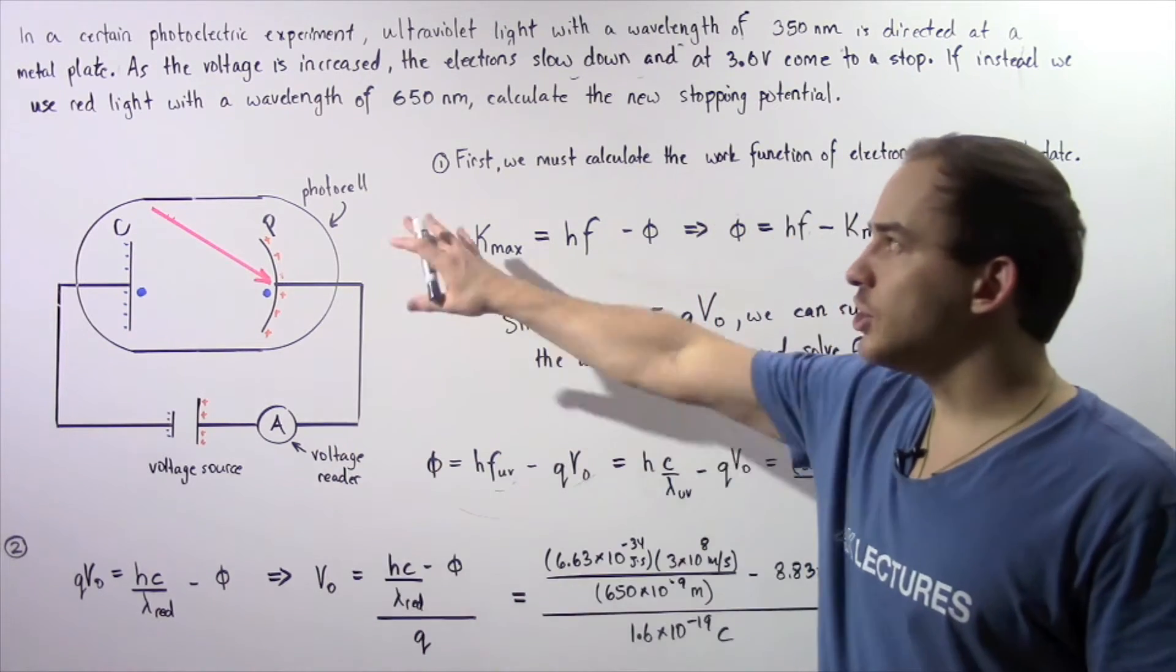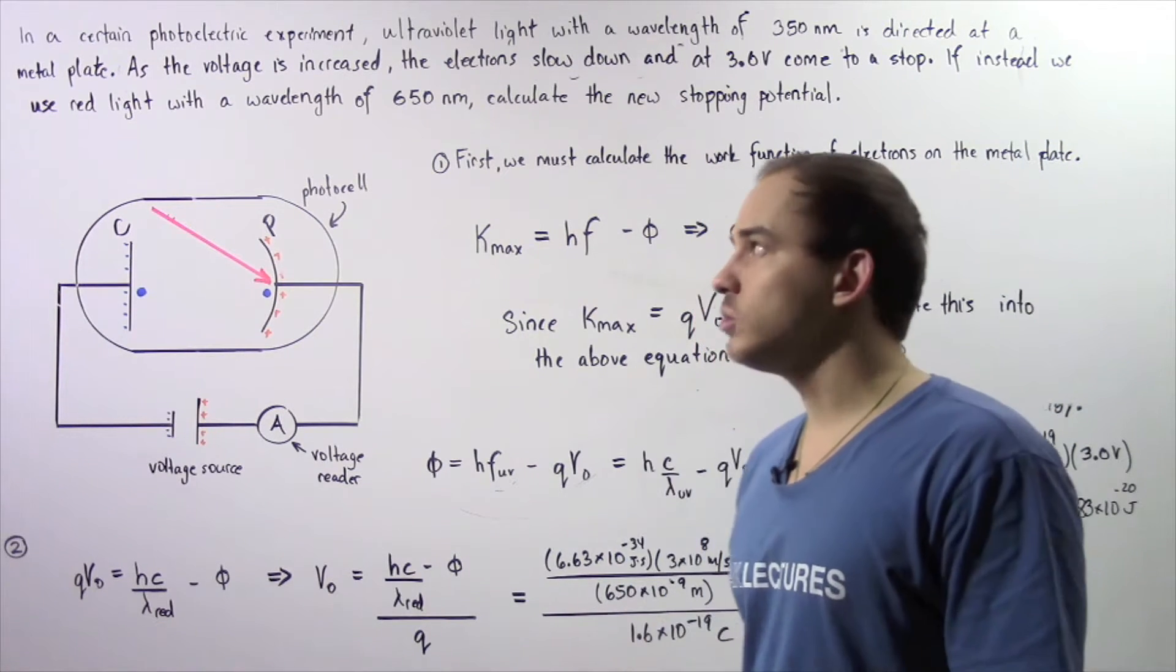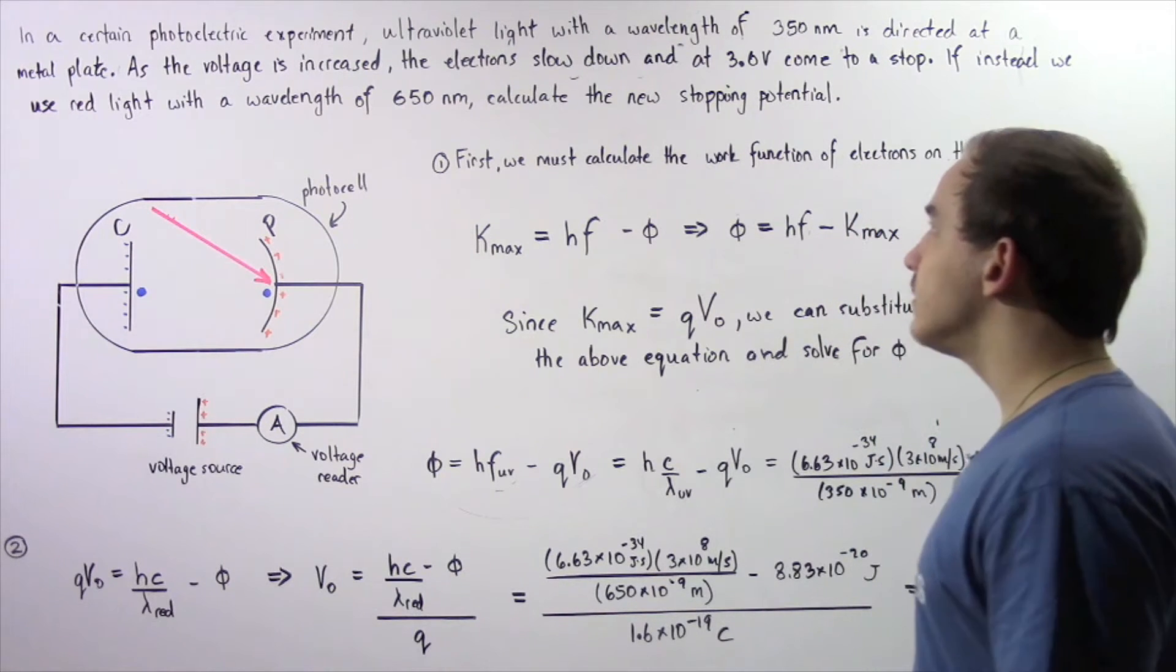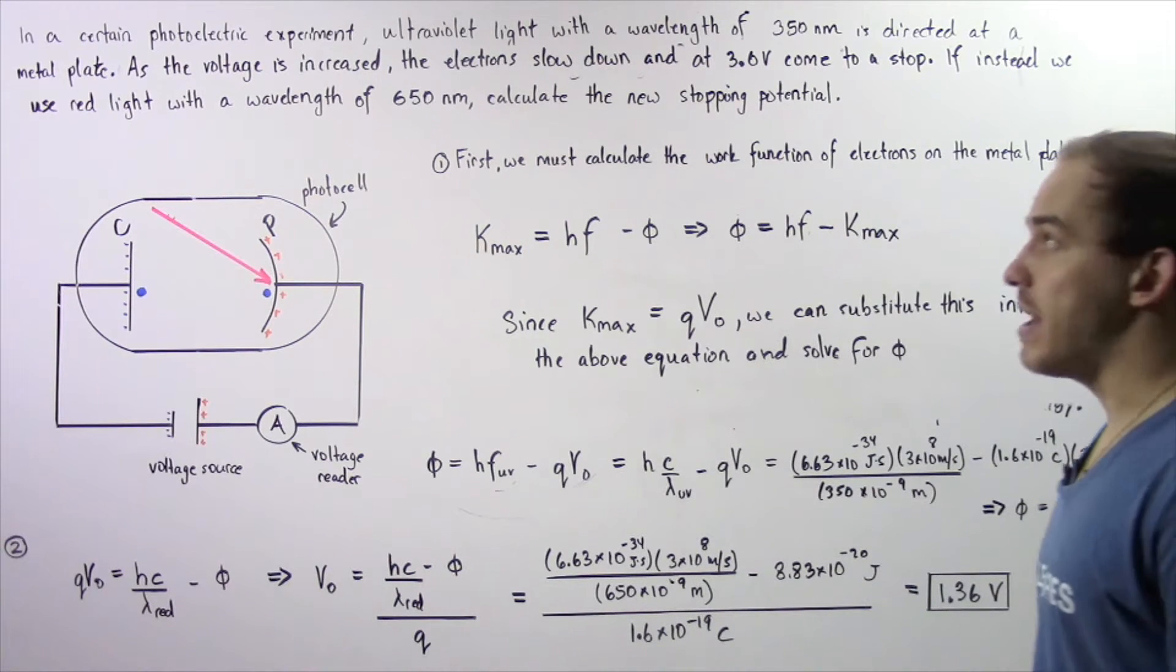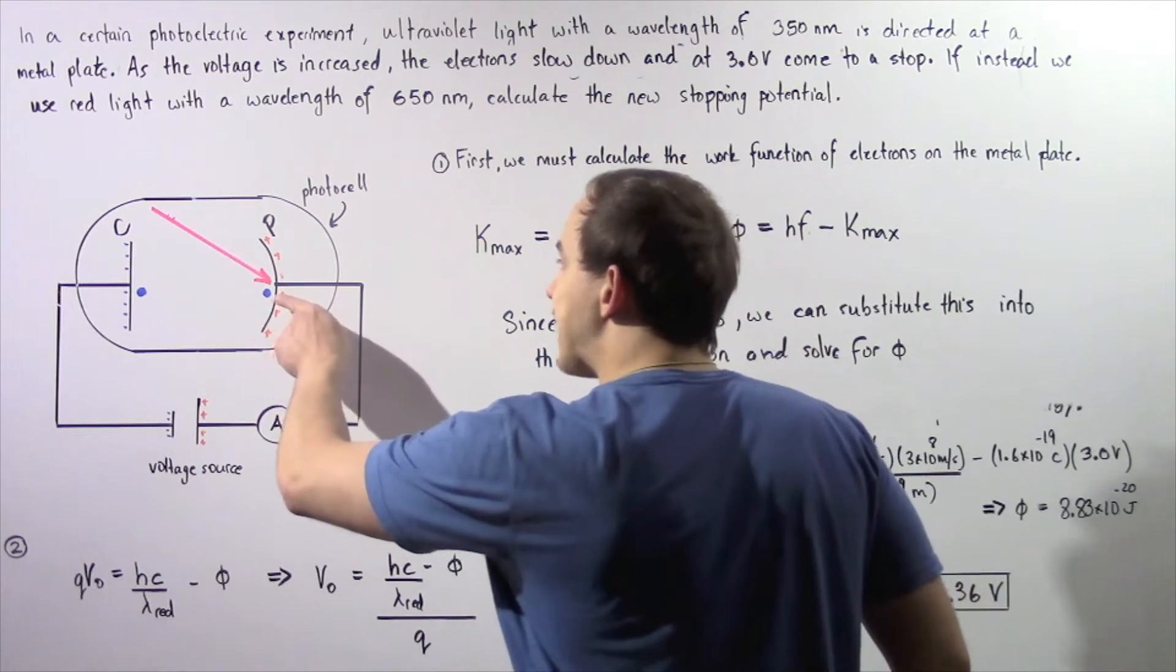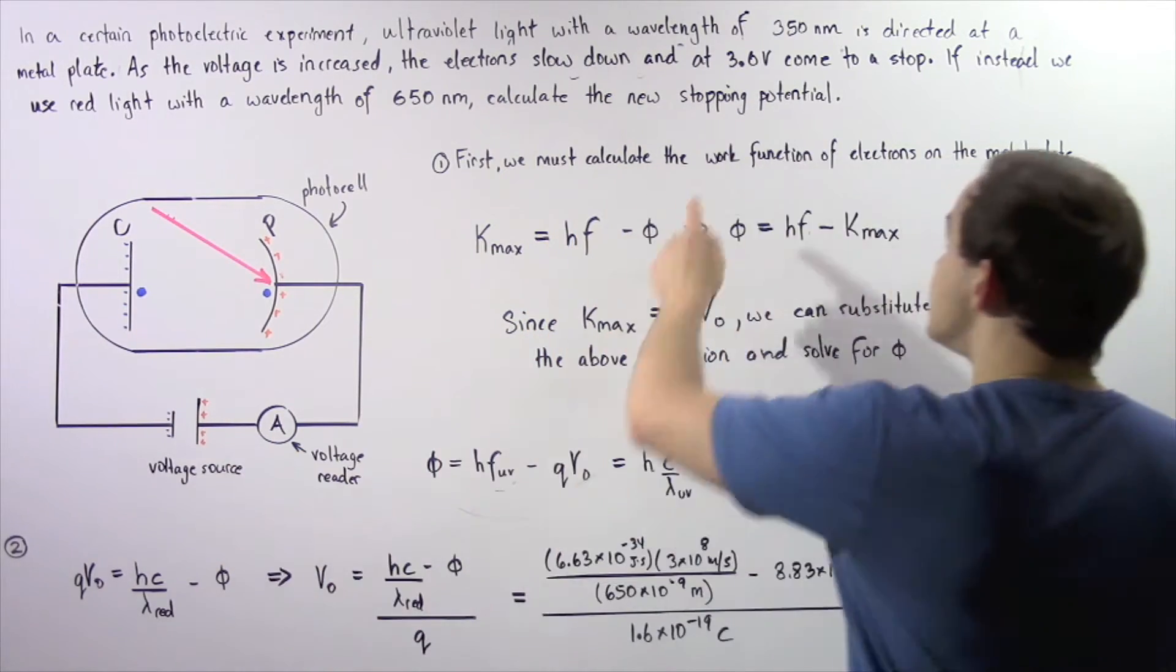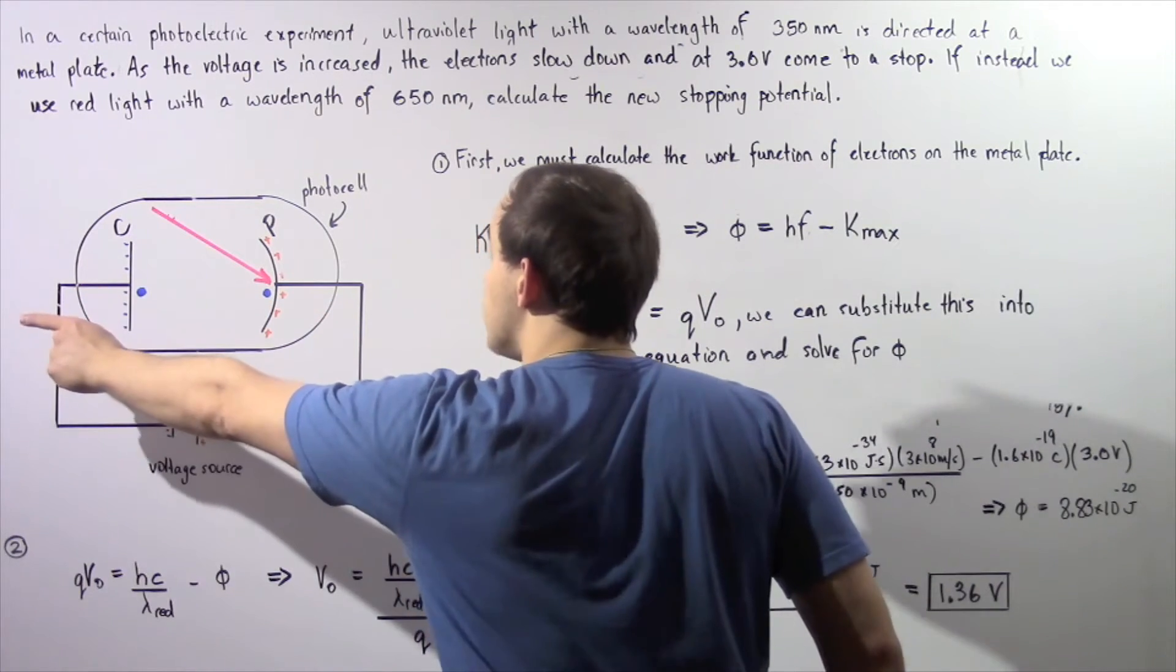So now let's actually look at the following example that deals with the stopping voltage. In a certain photoelectric experiment, ultraviolet light with a wavelength of 350 nanometers is directed at a metal plate as shown in this diagram. Now as the voltage is increased, these electrons moving across will slow down and eventually when the voltage is 3 volts, these electrons will stop moving across.